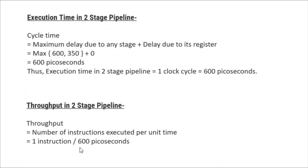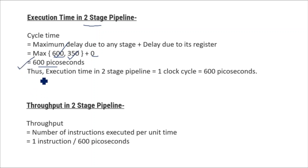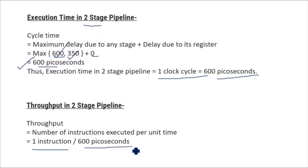Now we will calculate for the two-stage pipeline. The formula is the same: cycle time equals the maximum delay due to any stage. This two-stage pipeline has delays of 600 and 350 picoseconds, so the maximum value is 600. Since register delay is not given in the question, we put zero. So cycle time becomes 600 picoseconds. Thus execution time in the two-stage pipeline equals one clock cycle, which is 600 picoseconds. Throughput in the two-stage pipeline is one instruction divided by 600 picoseconds.